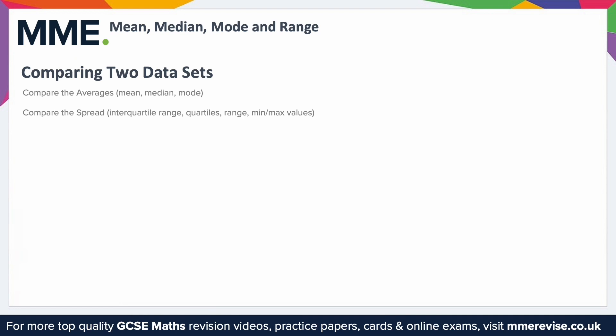You could use the minimum and maximum values in a similar way. For example, talking about a class's test scores: the class with the highest maximum value had the student who performed the best, and the class with the lowest minimum value had the student who performed the worst, and so on.